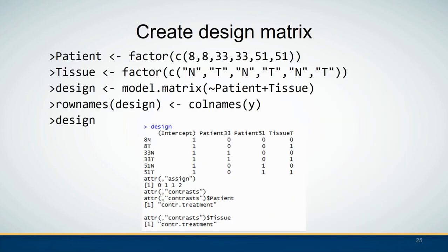Next, a design matrix should be created for DGE analysis. In this example there are two factors: the patient factor and the tissue factor. Each of the samples needs to be specified regarding which patient and which tissue it belongs to.